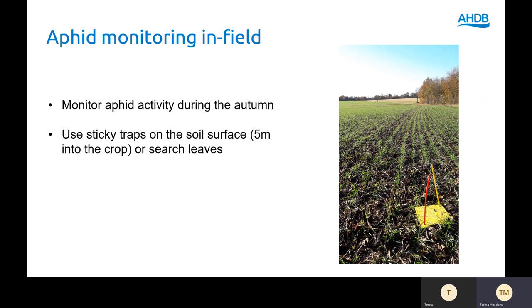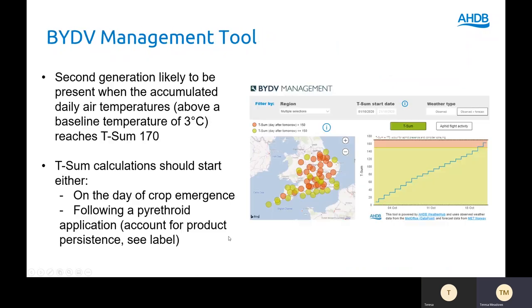If you find aphids to be present, you can also use our AHDB BYDV management tool to monitor when the second generation might be flying. That second generation is likely to be present when the accumulated daily air temperature above a baseline of three degrees reaches a T-sum of 170.